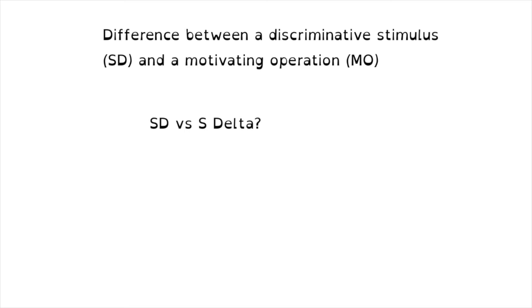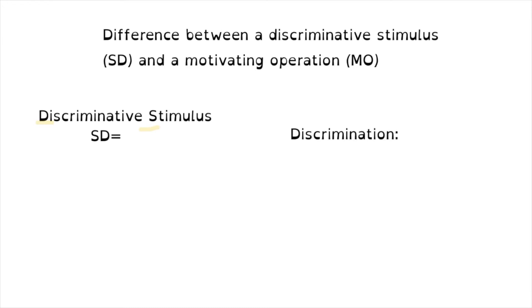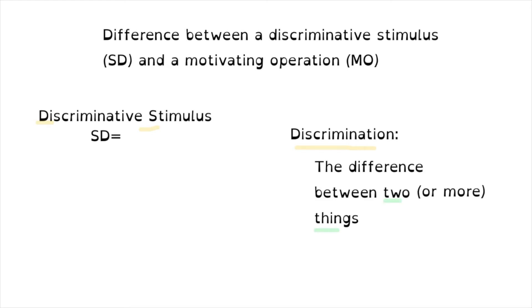So first let's talk about the definition. An SD is a discriminative stimulus. That term sometimes trips people up because it is lengthy, and SD is kind of reversed with the initials for the acronym, but it is a discriminative stimulus. A stimulus is just anything in the environment that makes contact with our sense modes — things that signal availability of things or signal things that are not available. The word discrimination in ABA means the difference between two things. There are things in the environment that are neutral to us, and we learn what they mean and what their signals mean to us.